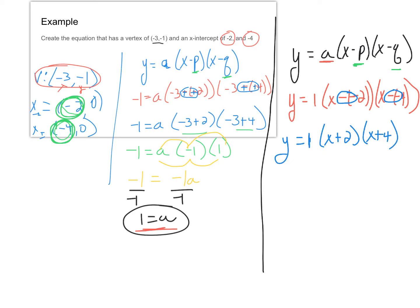And now to create our equation in standard form, because that's what the project wants us to do, we have to multiply this all together. So I'm going to FOIL or double distribute. X times X is X squared. X times four is four X. Two times X is two X. And two times four is eight. Now I'm going to combine like terms inside this parenthesis. So Y equals one times X squared plus six X plus eight.